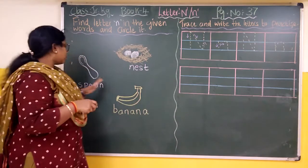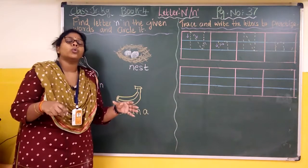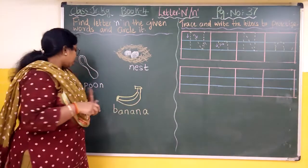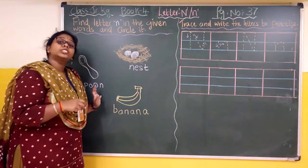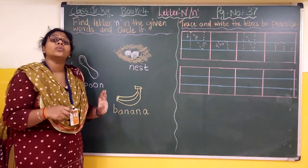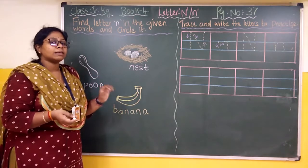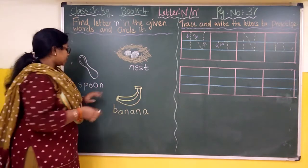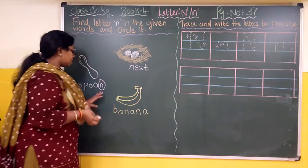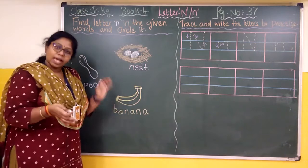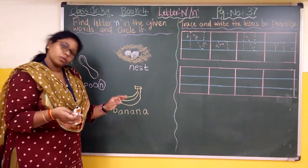So first is spoon — S-P-O-O-N. Spoon. So where is the letter N? Yes, the last letter itself is N. Spoon.